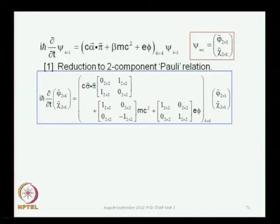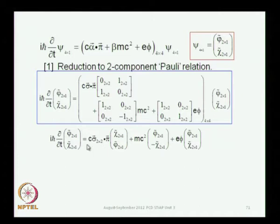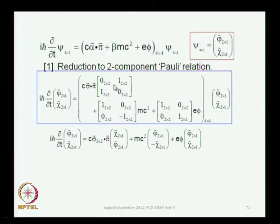The first thing I will do is to demonstrate the reduction to the two-component Pauli equation. This is the four-component form, and you have sigma·pi extracted from alpha·pi, and then you have the two-by-two matrices with 0-1-1-0 structure. That essentially gives you two equations: the 0-1-1-0 matrix, when it operates on the wave function, brings chi to the top and phi comes here, because it has 0 elements along the diagonal. In the second term with mc², you get phi minus chi.